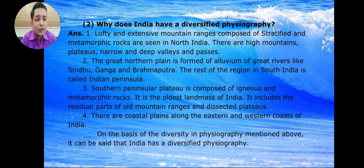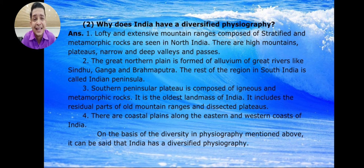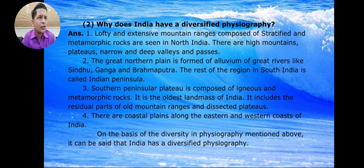The Southern Peninsular Plateau is composed of igneous and metamorphic rock. Unlike the northern mountains which are stratified and metamorphic, the peninsular plateau sits on igneous and metamorphic rock. It is the oldest landmass and includes the residual parts of old mountain ranges and dissected plateaus.